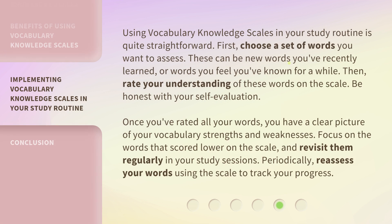Using vocabulary knowledge scales in your study routine is quite straightforward. First, choose a set of words you want to assess. These can be new words you've recently learned, or words you feel you've known for a while. Then, rate your understanding of these words on the scale. Be honest with your self-evaluation. Once you've rated all your words, you have a clear picture of your vocabulary strengths and weaknesses. Focus on the words that scored lower on the scale, and revisit them regularly in your study sessions. Periodically, reassess your words using the scale to track your progress.